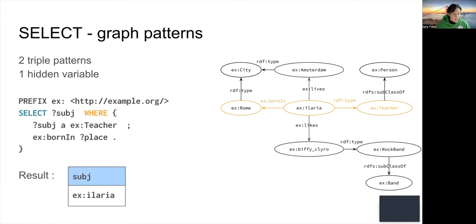You may often encounter hidden variables — variables declared in the WHERE clause but not included in the projection. For example, the projection asks only for the subject, but the WHERE clause contains two variables. There are cases where you need hidden variables; it may be slightly slower but is often what you need.